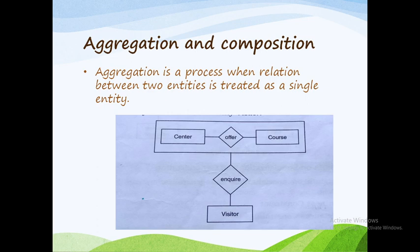Aggregation and composition are both related terms. It is a process when the relation between two entities is treated as a single entity. That means the relation between two entities is combined to frame one entity. Composition is combined, and aggregation means the relation between more entities combined.